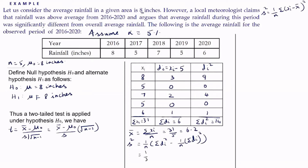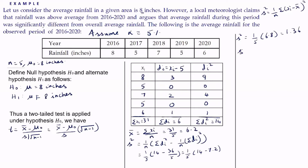So it is (1/5) × [14 − (36/5)] = (1/5) × [14 − 7.2] = (1/5) × 6.8 = 1.36. So the sample variance s² = 1.36.